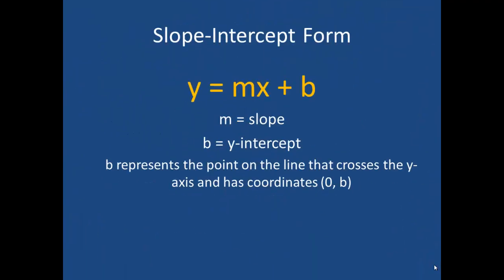So far this year we have been using linear equations in slope-intercept form. In this case y equals mx plus b, in which m is the slope and b is the y-intercept. Keep in mind that b represents the point on the line that crosses the y-axis.